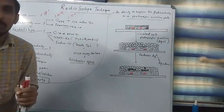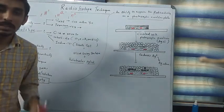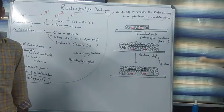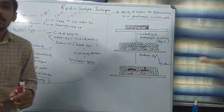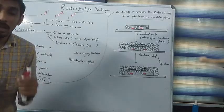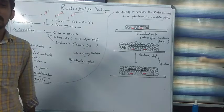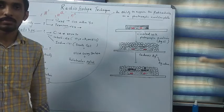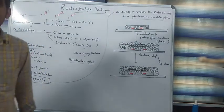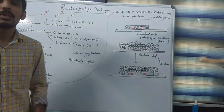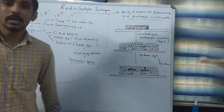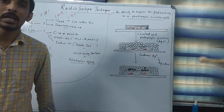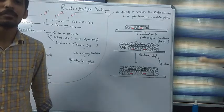Those compounds which show such kind of radioactivity are called radioactive compounds. If a radioactive compound takes time to convert into half of its original amount by emitting certain radiation or particles like alpha, beta, or gamma, then that duration is called t-half or half-life period.